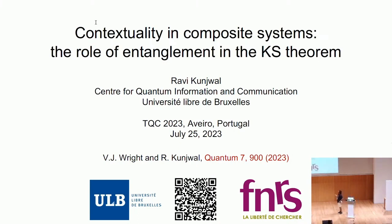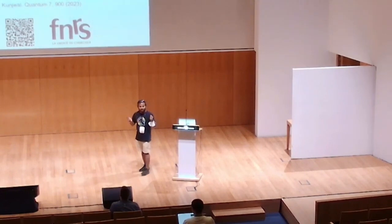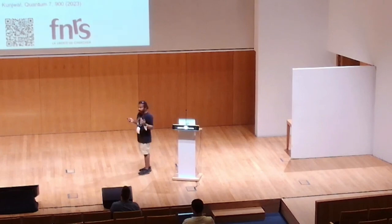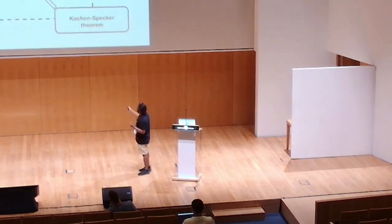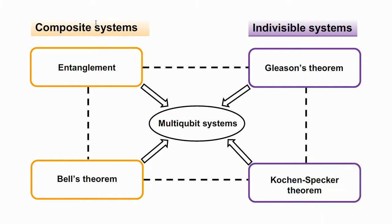This is joint work with Victoria Wright. The whole talk is about how different notions of non-classicality for multi-qubit systems are logically related to each other. I focus on contextuality and entanglement. The focus of the talk is n-qubit systems, where n is any finite number of qubits. Entanglement and Bell's theorem are composite notions of non-classicality — you need at least two systems or two parties doing local measurements to talk about them.